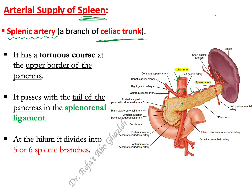As you can see, this is the pancreas, and the splenic artery — which supplies the spleen, as suggested by its name — passes along the body and tail of the pancreas, along the upper border. This tortuous artery is known as the splenic artery, and it travels all the way toward the spleen until it reaches the hilum.